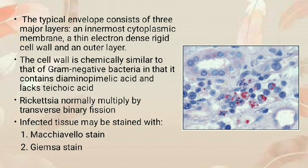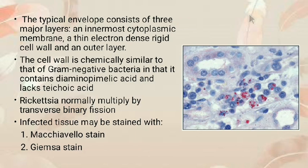The major target tissue of rickettsia is vascular endothelium. Louse-borne rickettsial diseases include European epidemic typhus; man is the sole reservoir for louse-borne diseases. The only flea-borne rickettsial disease is endemic murine typhus. Mite-borne rickettsial diseases include scrub typhus. Tick-borne rickettsial diseases include Rocky Mountain spotted fever and Q fever.